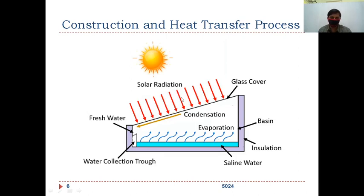Short wave radiation will be converted into long wave, and the glass will not allow the long wave radiation to go out. This is the greenhouse effect. As a result of heating the basin of the solar still, the water gets evaporated and becomes water vapor.